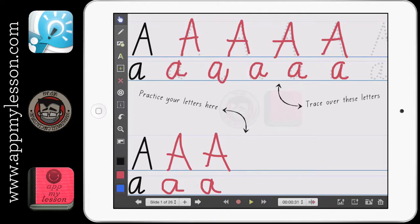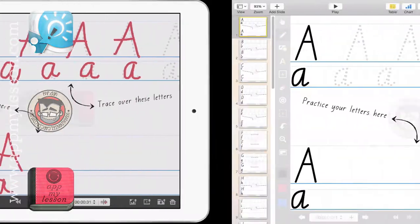So that is using letters with Explain Everything. So how did I make this? Let me show you really quickly because it's actually pretty simple.